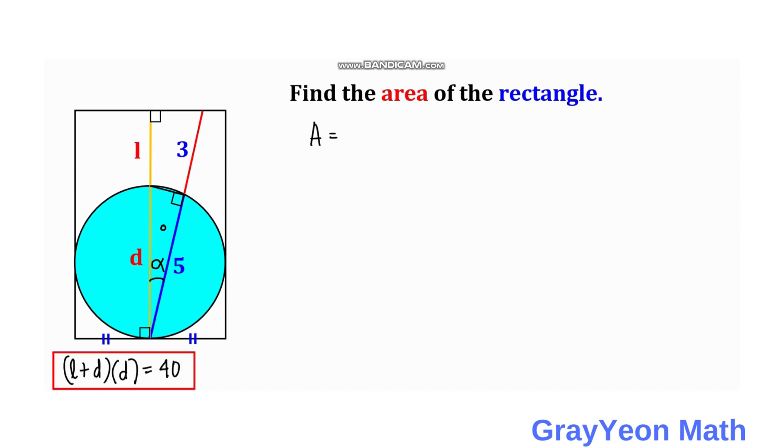So next we write an equation about the area of the rectangle and that will be this dimension, the diameter of the circle which is D, times this dimension which is actually L plus D. And since we know the value of L plus D times D which is equal to 40 square units.